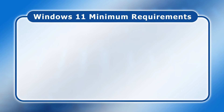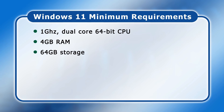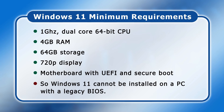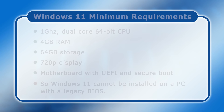Windows 11 requires at least a 1 GHz dual-core 64-bit CPU, 4 GB of RAM, 64 GB of storage, a 720p display, and a motherboard with a UEFI BIOS and Secure Boot. This means Windows 11 cannot be installed on a PC with a legacy BIOS. However, if these were the only hardware requirements, most current PCs could quite happily run Windows 11 — but sadly that is not the case.